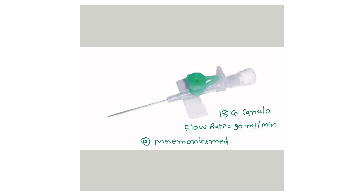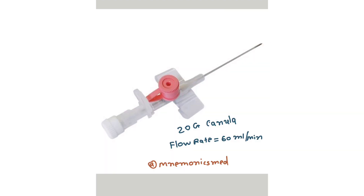The 18 gauge cannula is green color — useful for clinical purposes. Now this is the 20 gauge cannula — it is pink color and its flow rate is 60 ml per minute. Remember: pink cannula is 20 gauge.